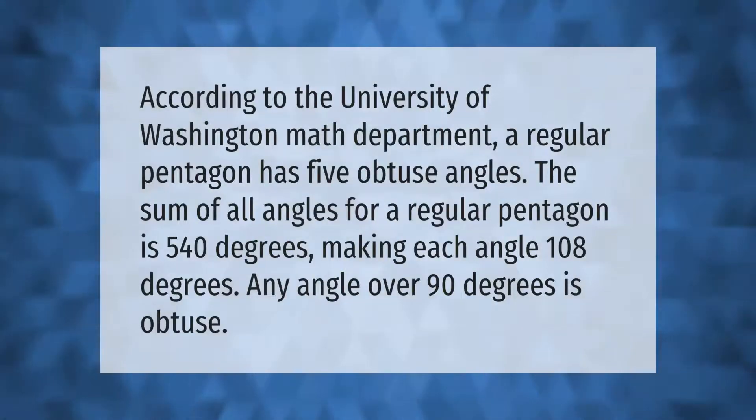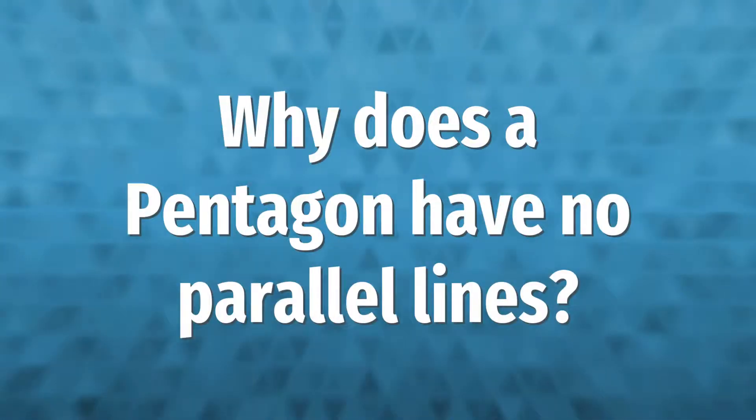According to the University of Washington math department, a regular pentagon has five obtuse angles. The sum of all angles for a regular pentagon is 540°, making each angle 108°. Any angle over 90° is obtuse.